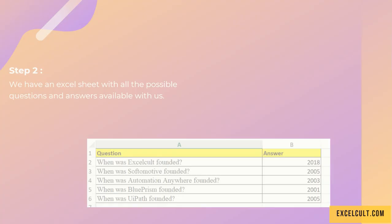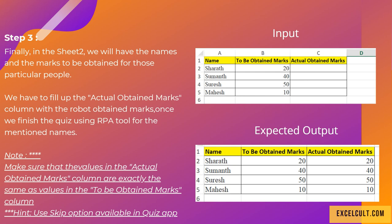The task here is to see there is an input and there is an expected output. As a final thing, we will have the names and the marks to be obtained for those particular people.